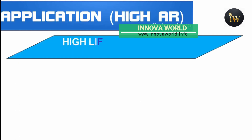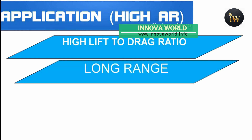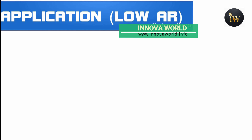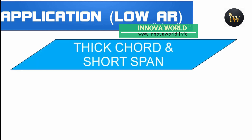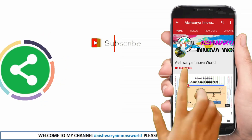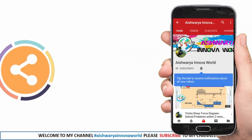High aspect ratio is used mostly for gliders, which require a high lift-to-drag ratio, and for aircraft requiring long range, high endurance, and low induced drag, which should have long span. Low aspect ratio applications require thick chord because of high-speed effects — like the Space Shuttle — and are therefore very poor as gliders, but suited for short-span fighter aircraft.